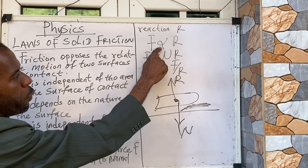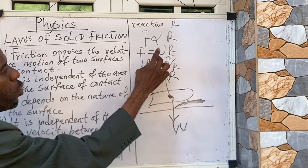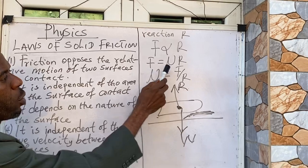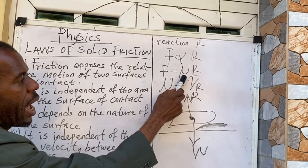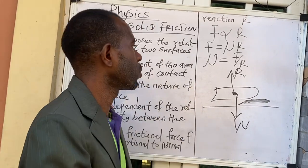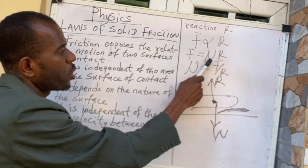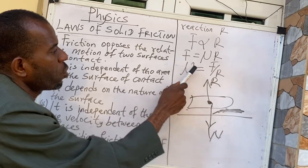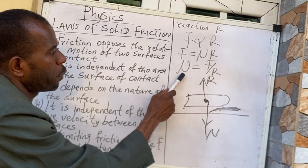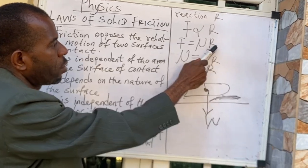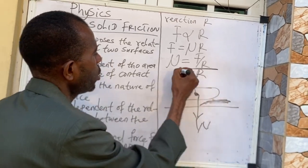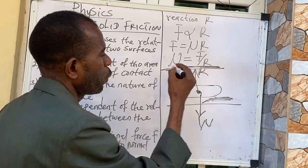We write F is proportional to R. Removing the sign of proportionality, we introduce a constant, giving us F equals mu times R. This mu is called the coefficient of static friction. Making mu the subject of the formula, we divide F by the normal reaction R. This formula is used to calculate the coefficient of static friction.